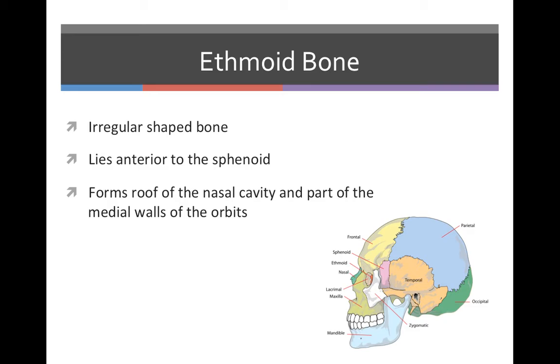The ethmoid bone is an irregular-shaped bone that lies anterior to the sphenoid. It forms the roof of the nasal cavity and part of the medial walls of the orbits, and it is shown right here where the mouse is.